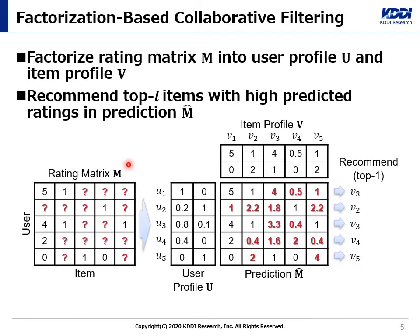Let's move on to talking about existing studies related to our inference attack. First, I will explain our target recommendation system. Most recommendation systems rely on collaborative filtering, which is a method to analyze patterns of users' historical behavior. In our research, we especially focus on factorization-based CF systems. The factorization-based CF system predicts unobserved entries in a rating matrix by using matrix factorization and recommends items to each user based on estimated entries.